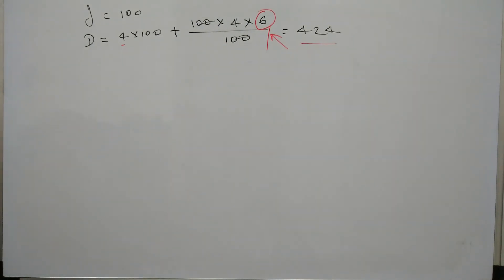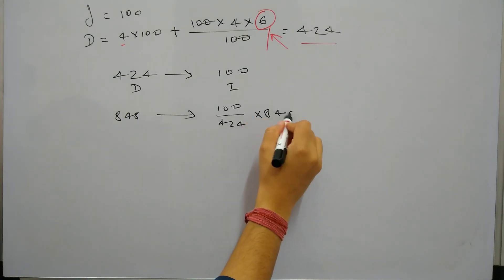Now we need to see if my debt is 424. So when my debt was 424, my installment was coming as 100, right? So in this problem if my debt is 848, so when debt becomes 848, what will be my installment? So it's 100 by 424 into 848.